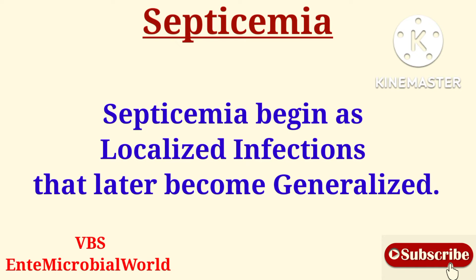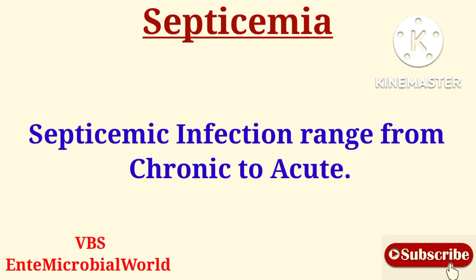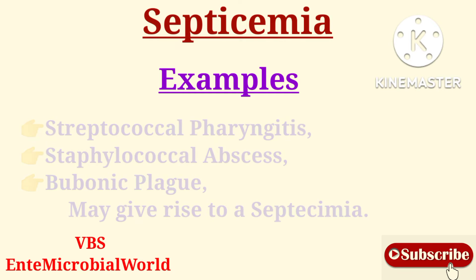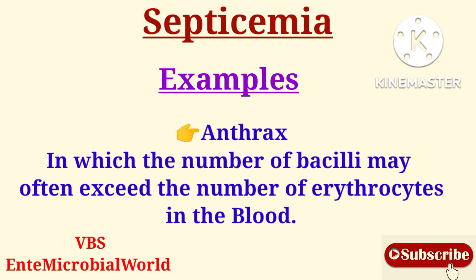Septicemia begins as localized infections that later become generalized. Septicemic infections range from chronic to acute. For example, streptococcal pharyngitis, staphylococcal abscess, bubonic plague may give rise to a septicemia. In Anthrax, the number of bacilli may often exceed the number of erythrocytes in the blood.